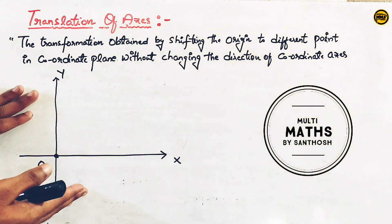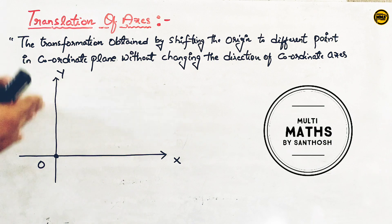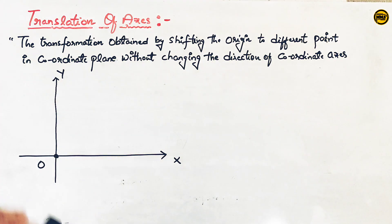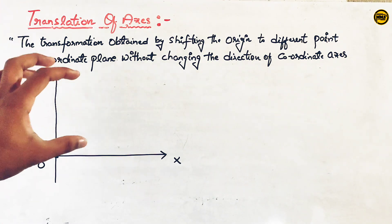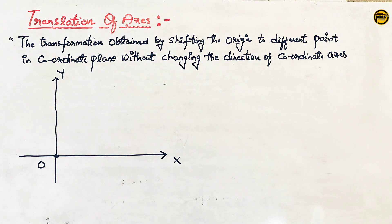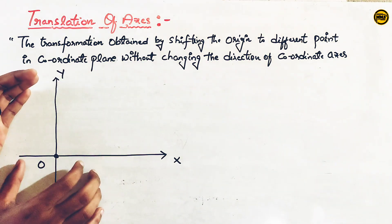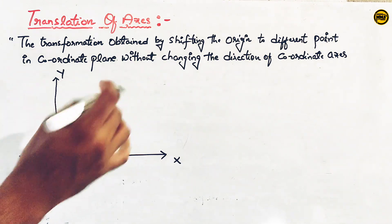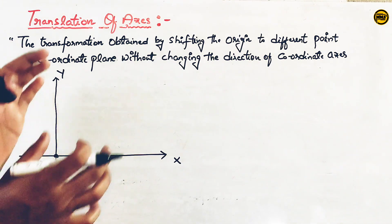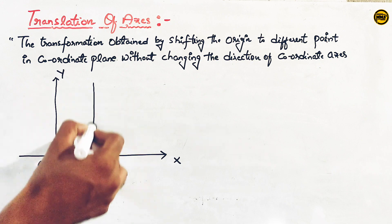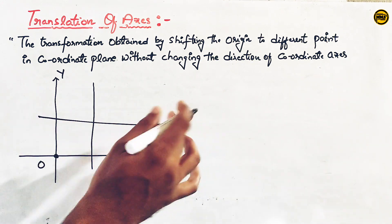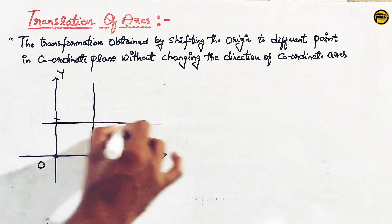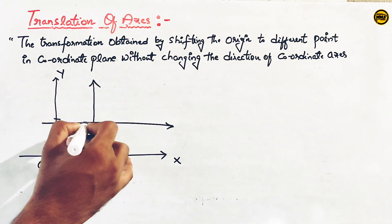The original coordinate system has x-axis, y-axis, and the origin, with positive and negative values. Now, let's shift the position of the origin to a new position. We can draw the new position and mark the new axes — x-dash and y-dash.